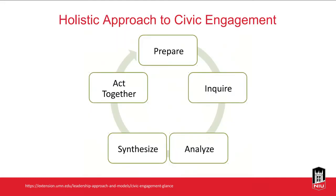Here is the University of Minnesota Extension's holistic approach to civic engagement, which consists of five stages: prepare, inquire, analyze, synthesize, and act together. The prepare stage involves understanding the context in which the issue will be addressed to assess community readiness, and it ends with the decision to launch work on that issue using civic engagement — public discussion, reflection, and collaboration.